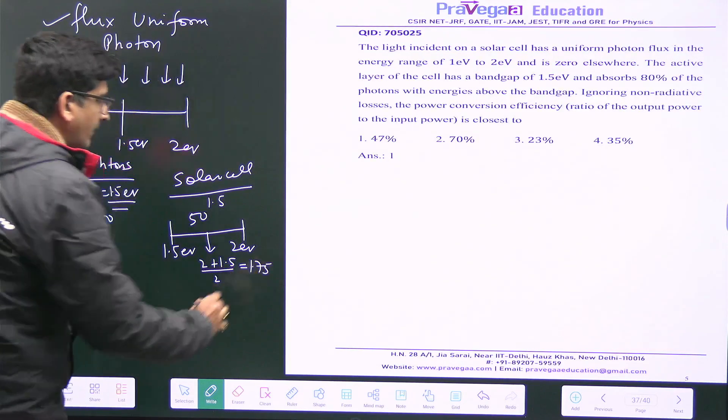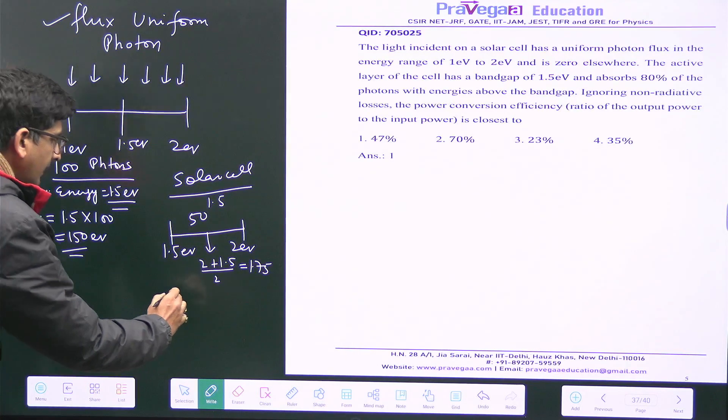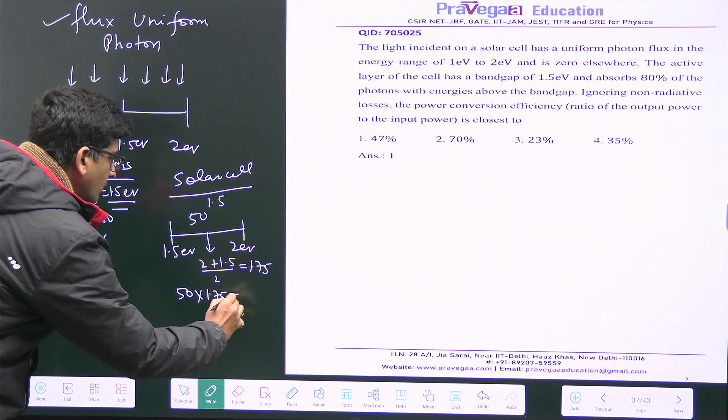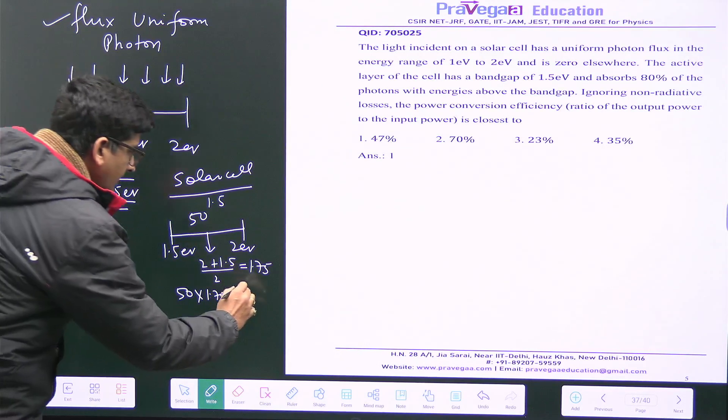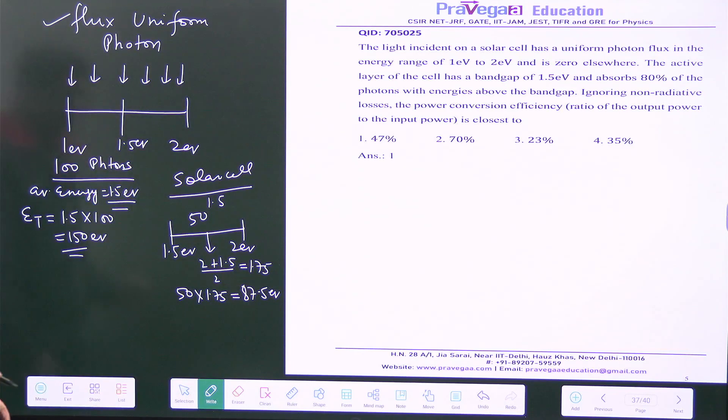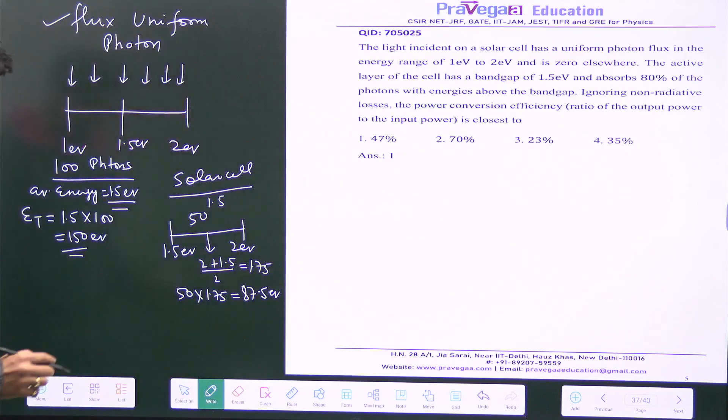What is the energy content here? It is 50 into 1.75. You just multiply this number, 50 into 1.75, it will be 87.5 electron volt.